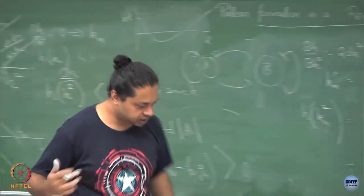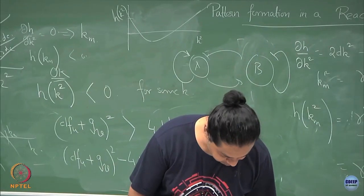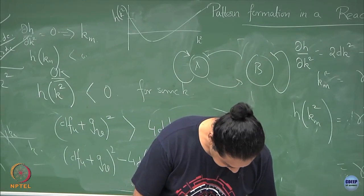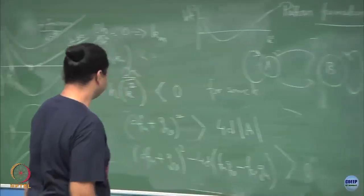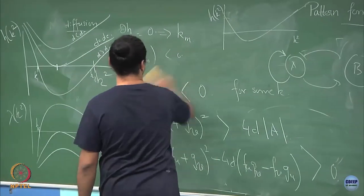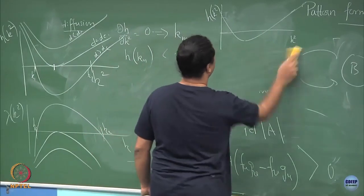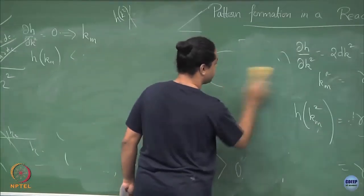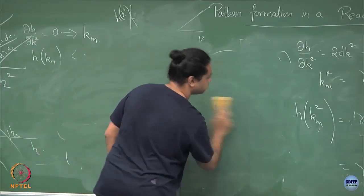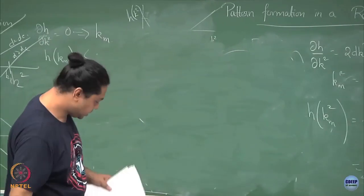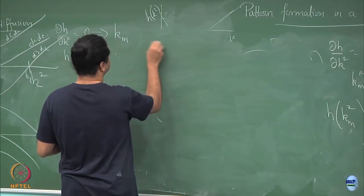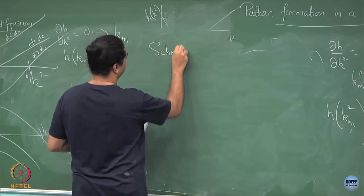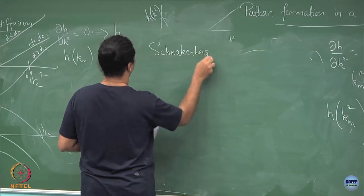Just to look at an example, last class I showed a simulation of what I called the Schnakenberg kinetics. As an example we can take a look at it. For this particular Schnakenberg kinetics, f and u, is this clear? This is Schnakenberg.